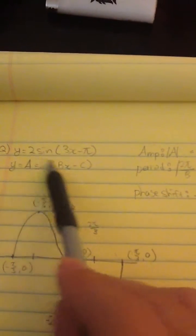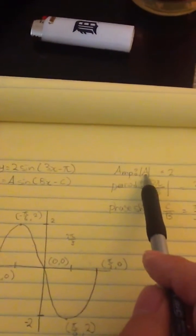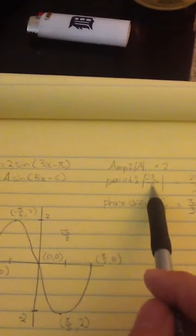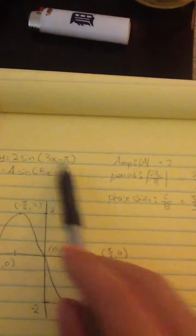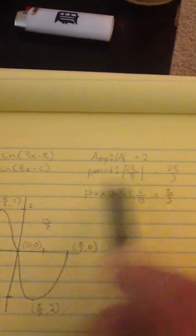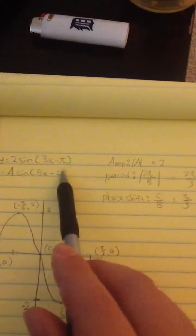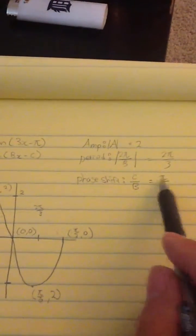This is the basic form for the sine cycle. To get the amplitude, amplitude equals a, which is 2. The period equals 2π over b, which is 2π over 3 since b is 3. And phase shift equals c over b, which is π over 3.